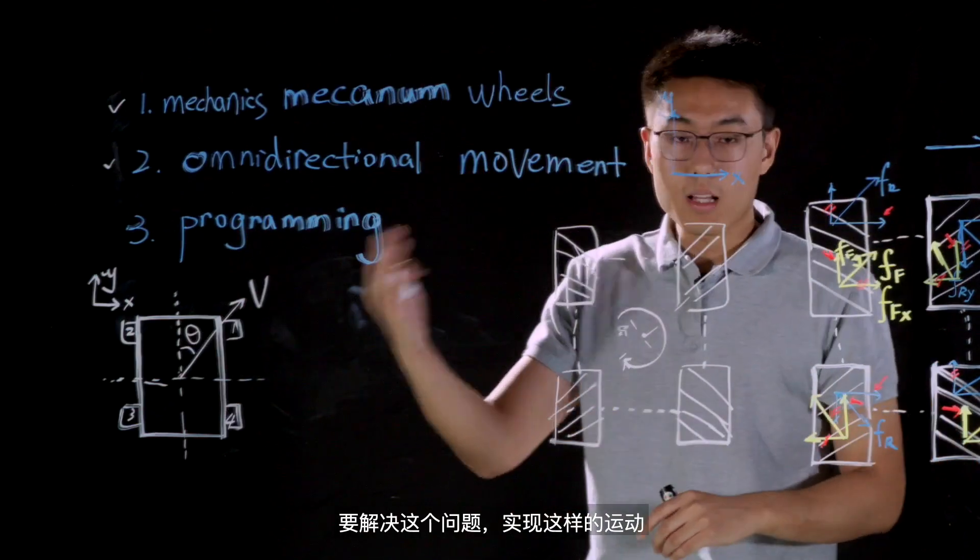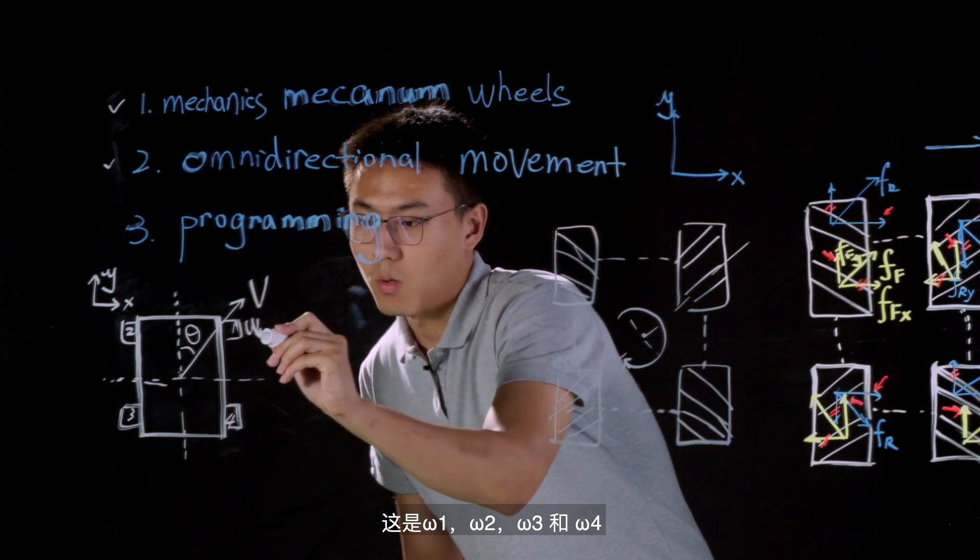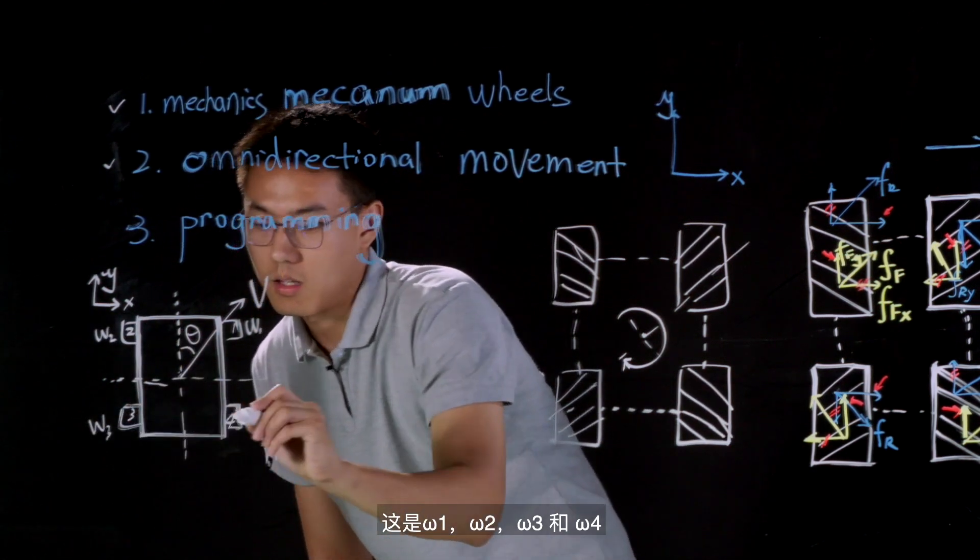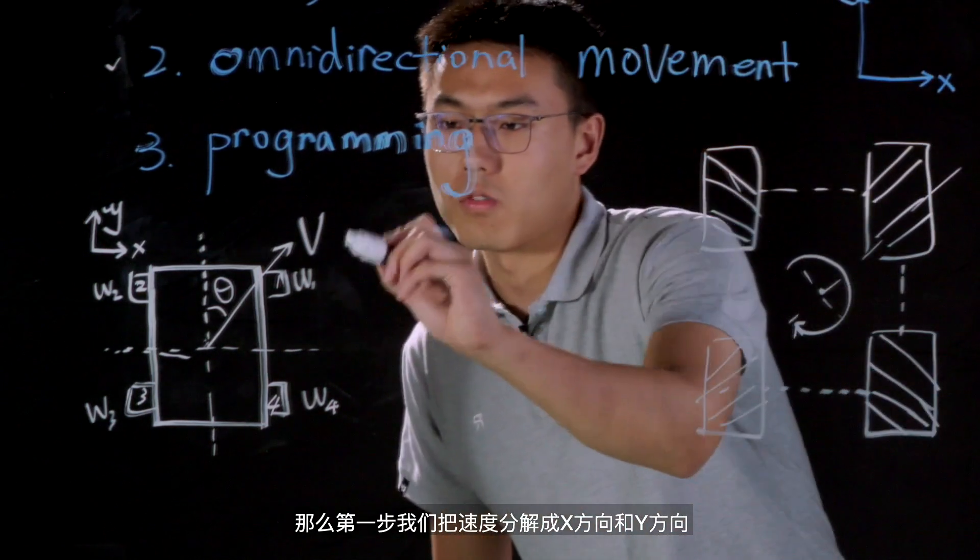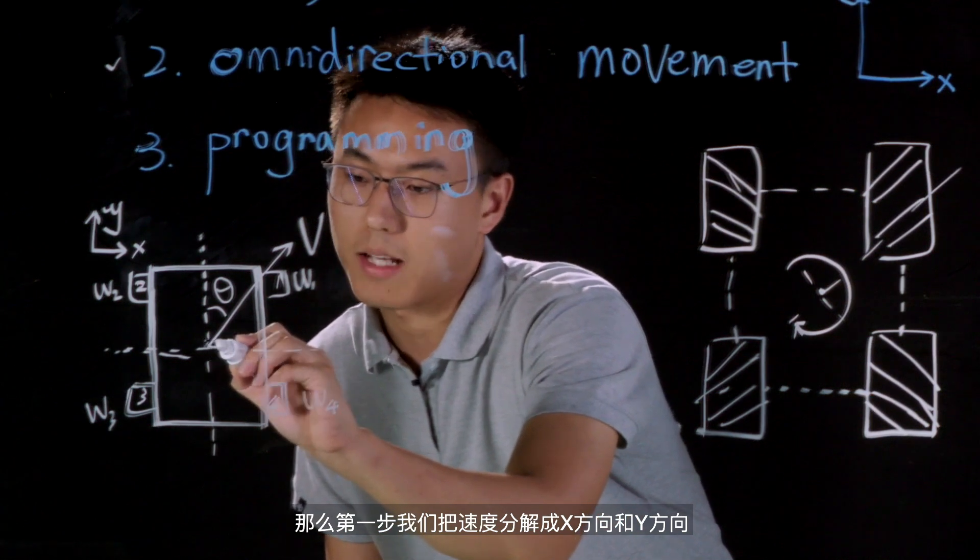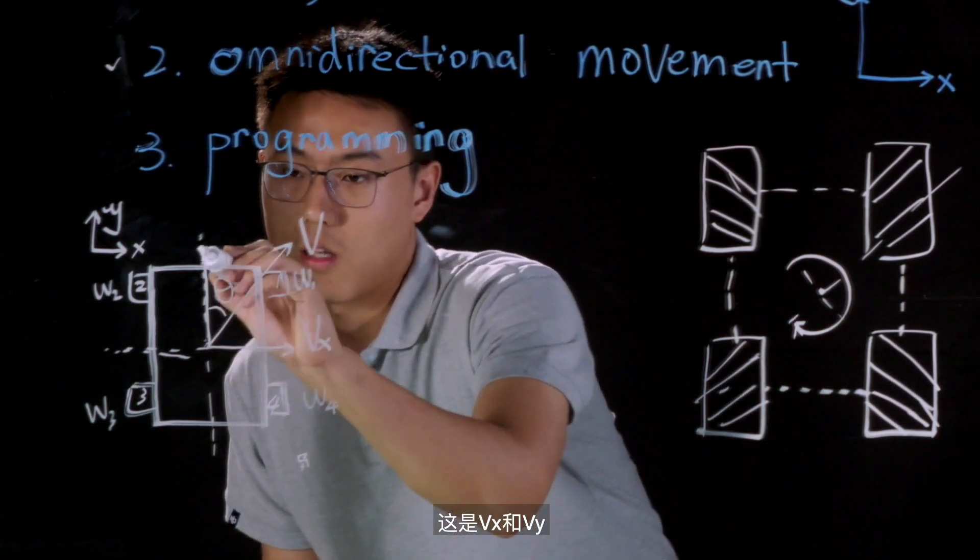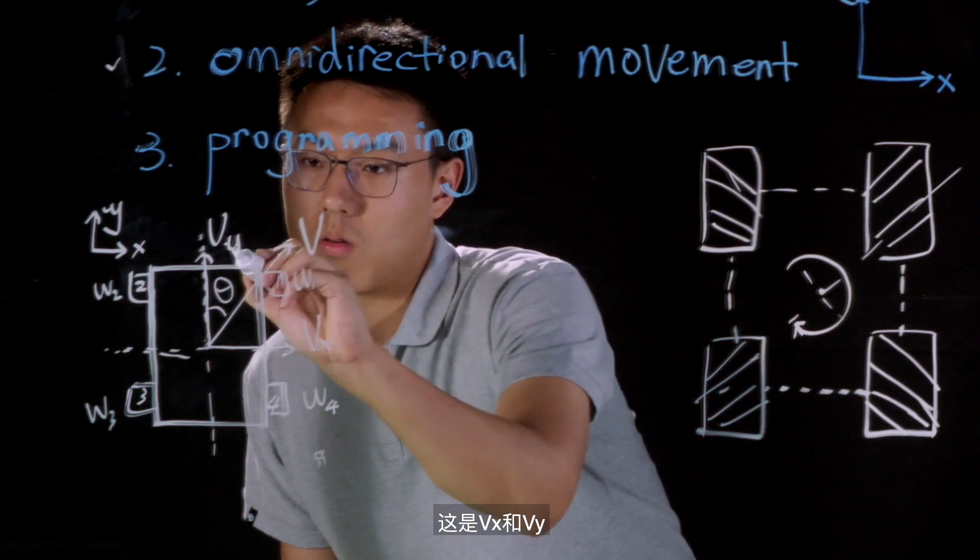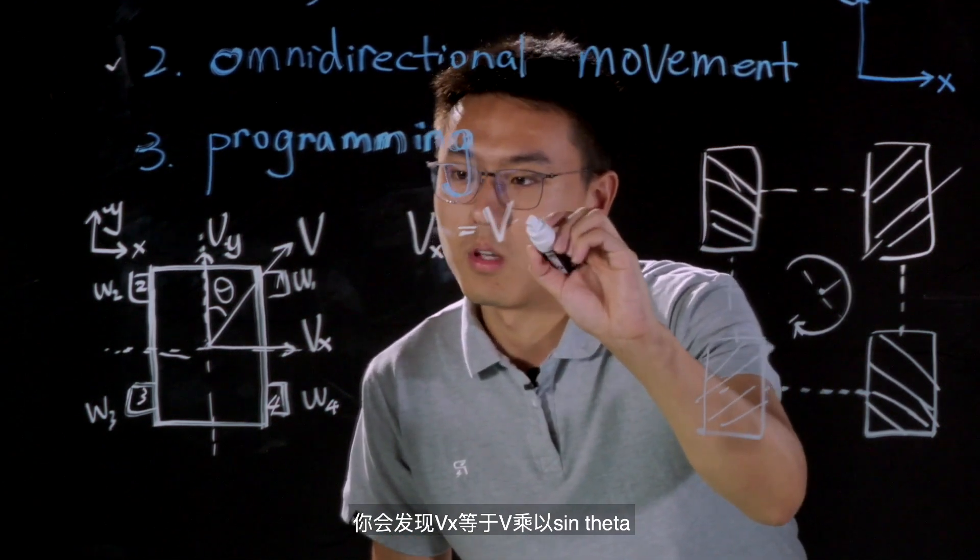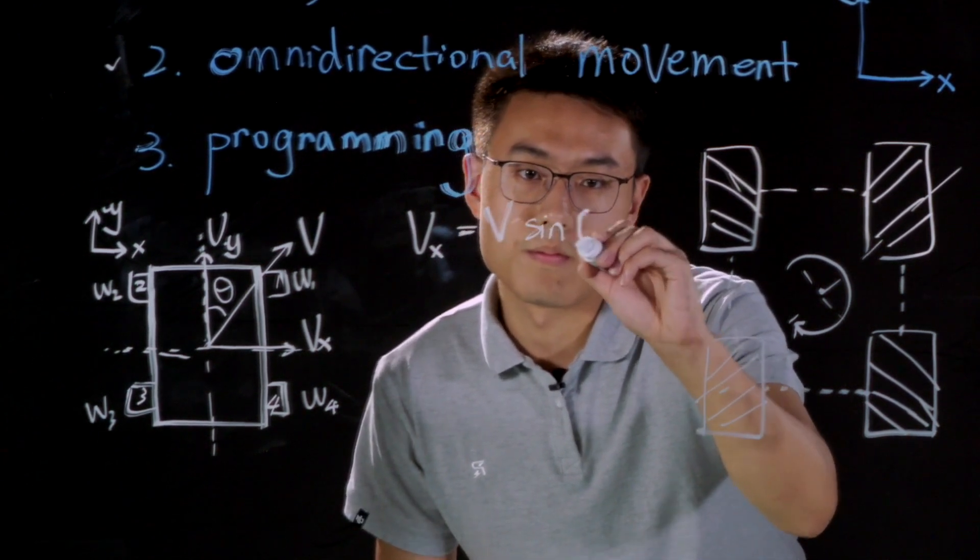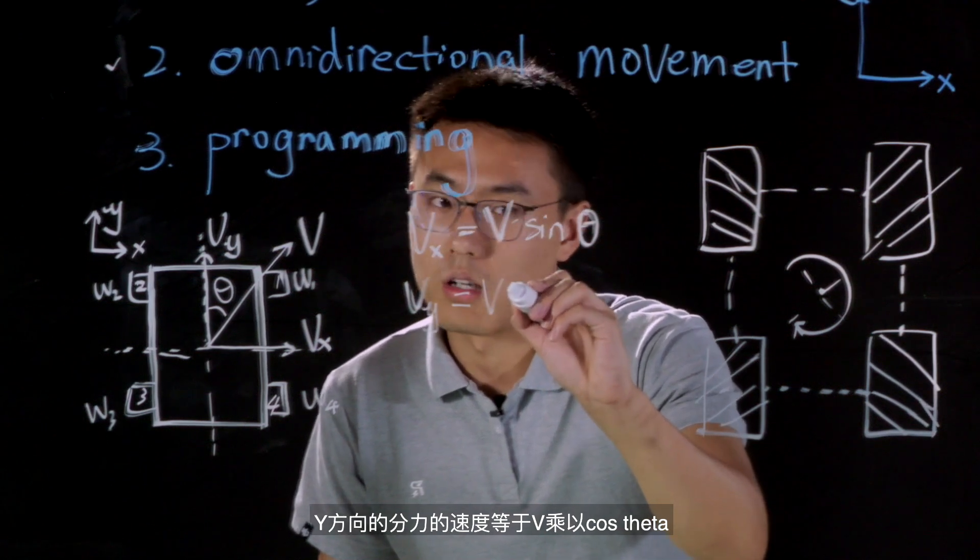To solve this problem and to realize this kind of motion, we need to find the rotational speed of each wheel. That is omega 1, omega 2, omega 3 and omega 4. And by the way, this is a view from the top of S1. Now, the first step is to decompose this overall velocity into X axis and Y axis respectively. This is Vx and this is Vy. So by very simple trigonometry, you can find that Vx equals to V times sine theta. And the component force on Y axis equals to V times cosine theta.